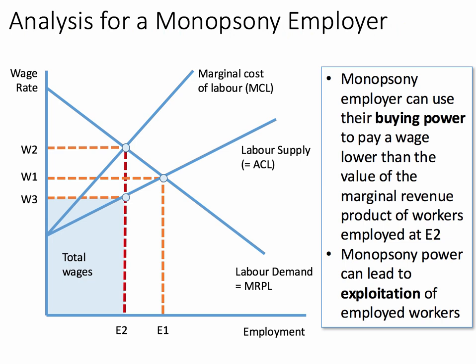The monopsony can exploit employed workers by paying them a wage lower than the value of the marginal revenue product. And the area of exploitation is shown by this area here — this shows the wages lost from underpayment by the employer.